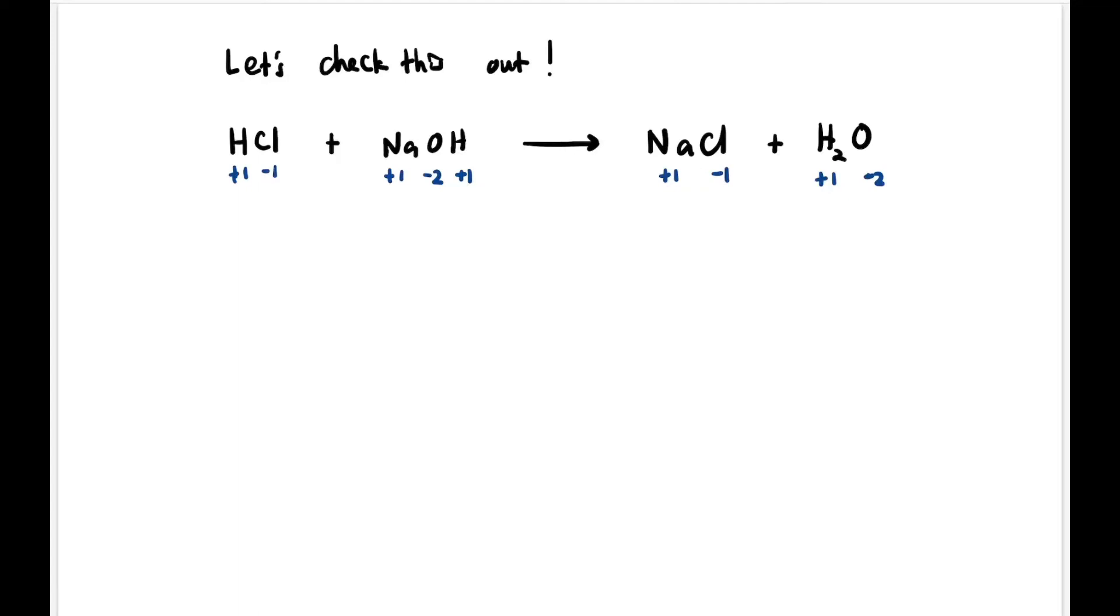All these elements don't have any changes in the oxidation number. Hydrogen +1 becomes +1, Cl -1 becomes -1, Na maintains +1 to +1. So oxidation number of all the elements does not change. So if oxidation number does not change, this reaction is not a redox reaction.